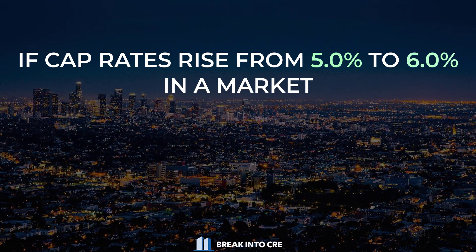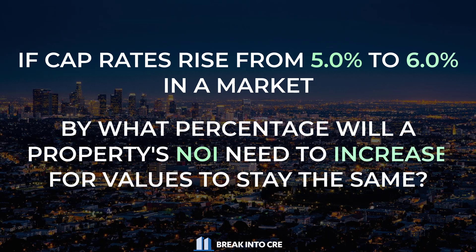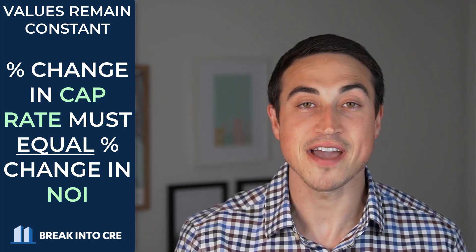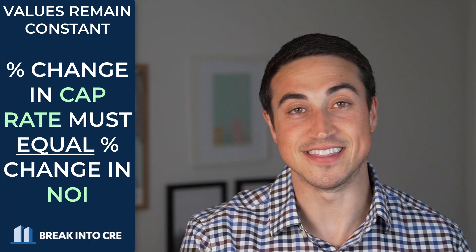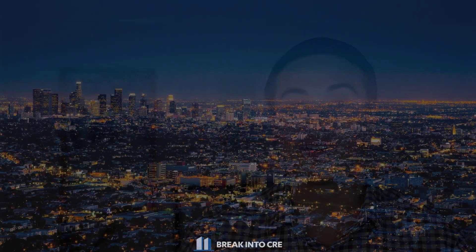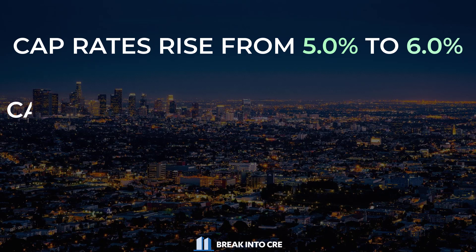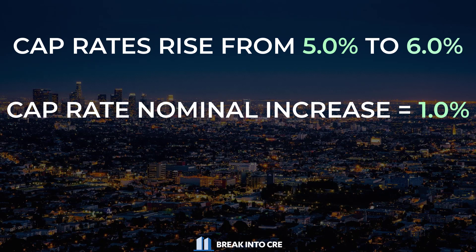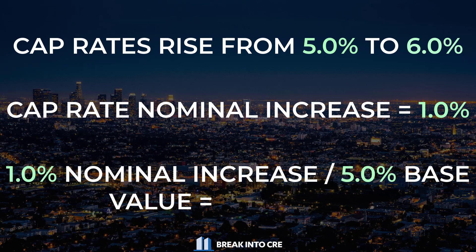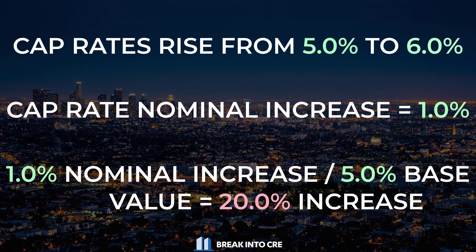A question that might be thrown your way on this topic could be: if cap rates rise from 5% to 6% in a market, by what percentage will the NOI of a property have to increase for property values to stay the same? It might seem like you need Excel or a financial calculator, but the solution is actually pretty simple. For values to stay the same, the percentage change in both cap rates and NOI values needs to be the same for both metrics. So if cap rates rise from 5% to 6%, that 1% change as a percentage of the original 5% cap rate means cap rates have actually risen by 20%, not 1%.